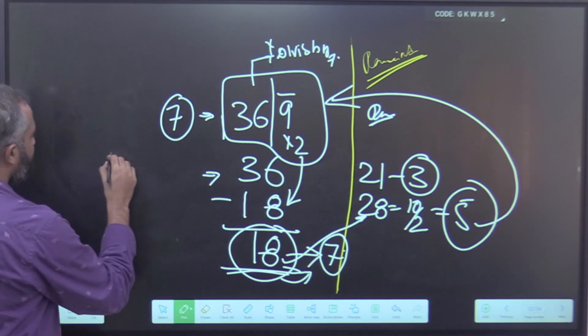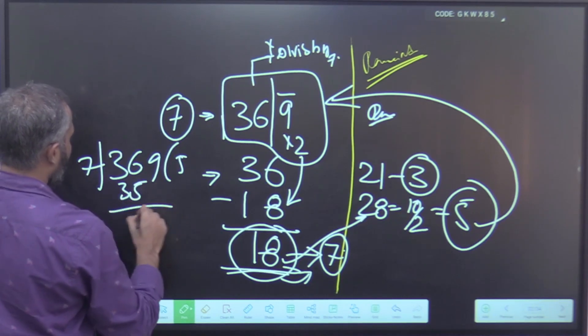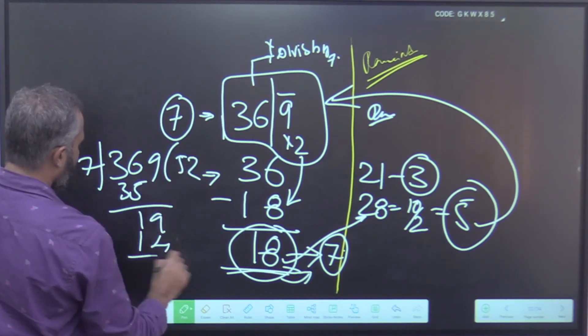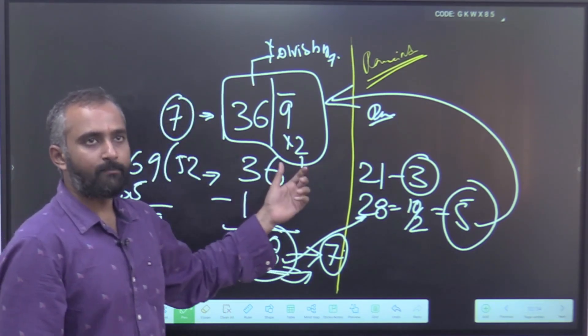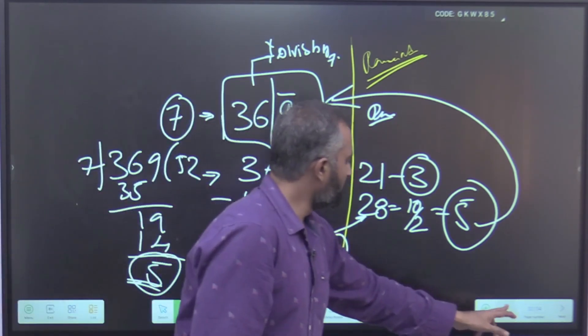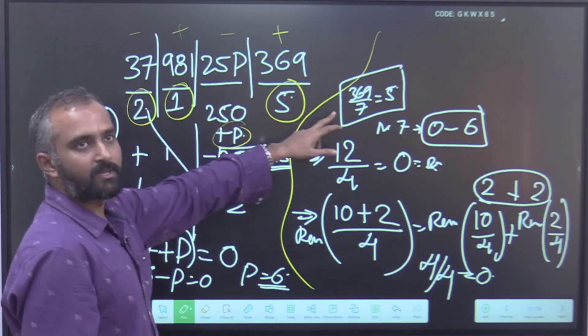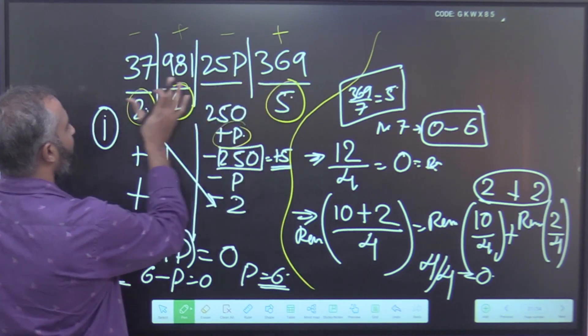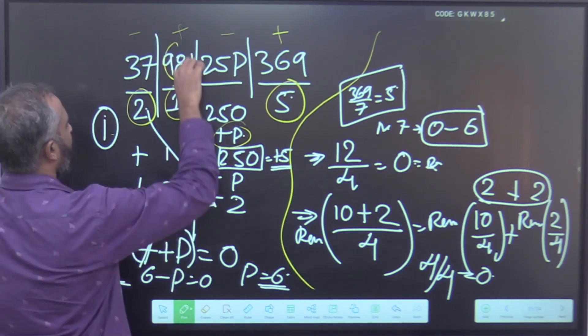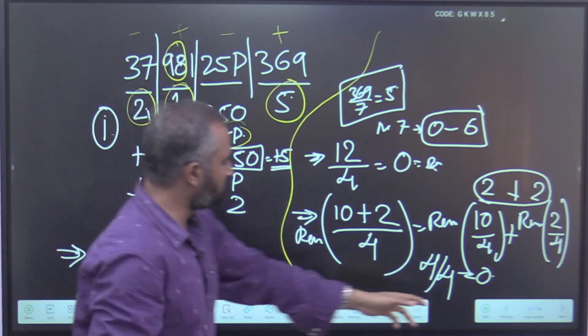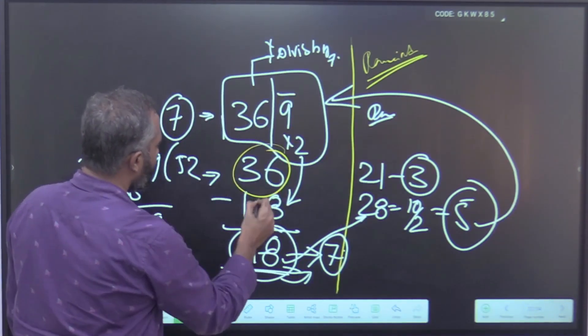You want to check this? Check by the long division method: 369 by 7, 7×5 is 35, 19, 7×2 is 14 and 5. Instead of doing all this, just for small numbers follow this way. We have not used this trick here, we just did by long division method, but when you use this trick further, this becomes much more easier because now you are not even dealing with 3-digit numbers, you are dealing with 2 digits only, because every 3-digit number is reduced to a 2-digit number through this process.